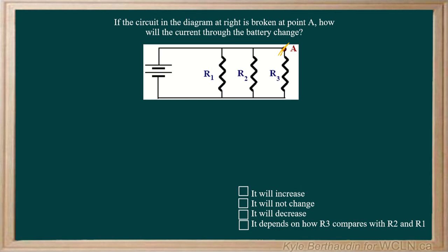So in this circuit, we have three resistors that are in parallel with one another. We're asked, if the circuit is broken here, which effectively removes the third resistor from the circuit, how is the current going to change through the battery?